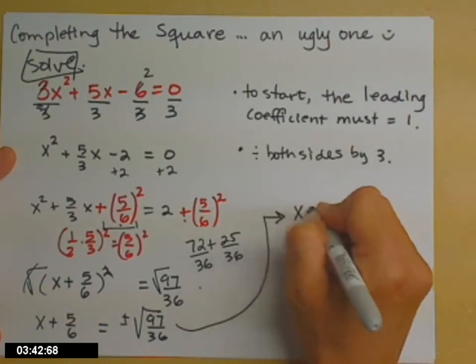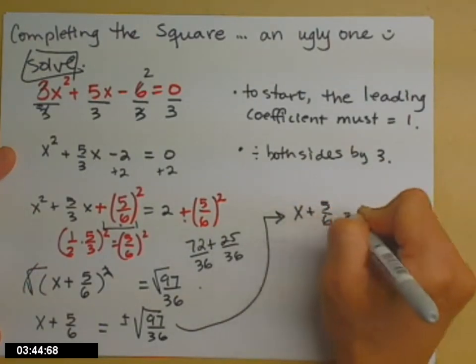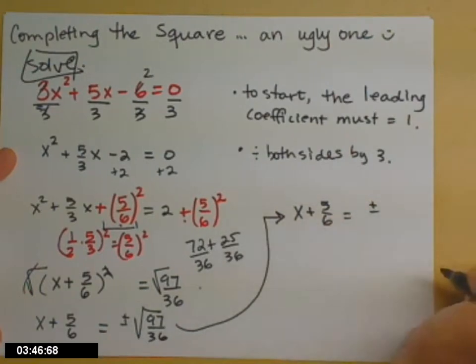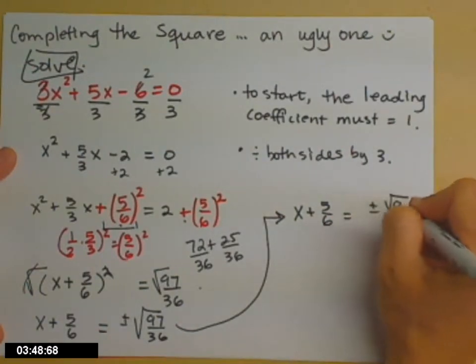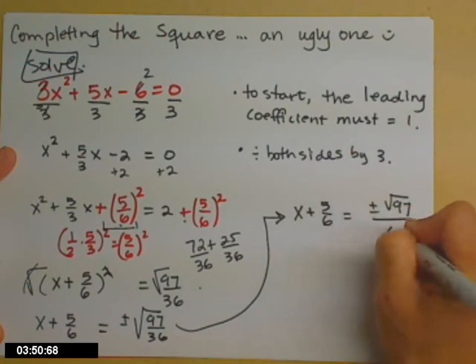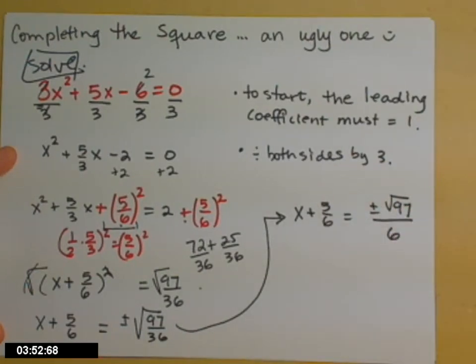So I have x plus 5 sixths equals plus or minus, I'm going to break up the radical, one for the top, one for the bottom. And I'm going to go ahead and simplify the bottom because the square root of 36 is 6.